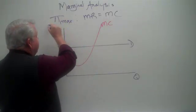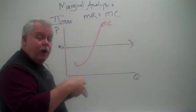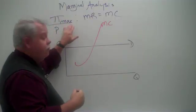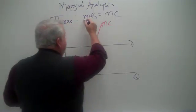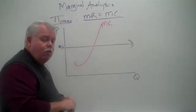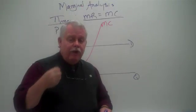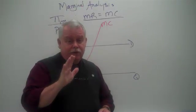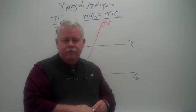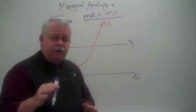Our general rule is that profit maximization, I use pi for profit here, profit maximization occurs where marginal revenue equals marginal cost. You're going to want to remember that little rule forever. It explains your own behavior, by the way, more as we go along.